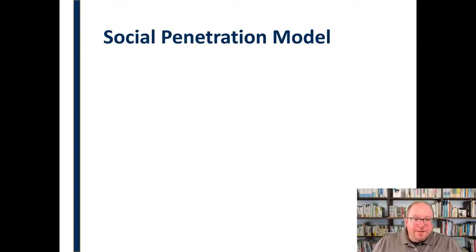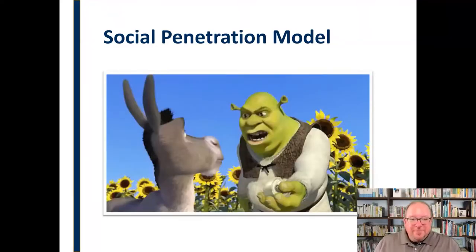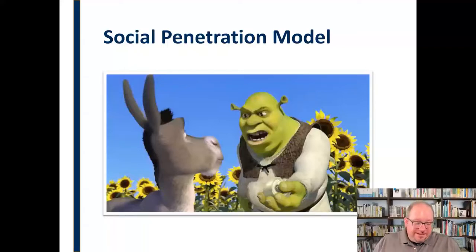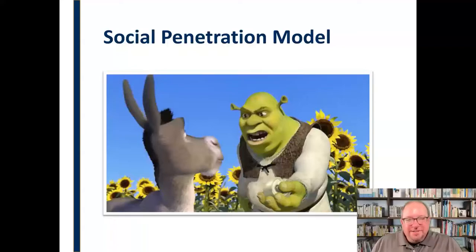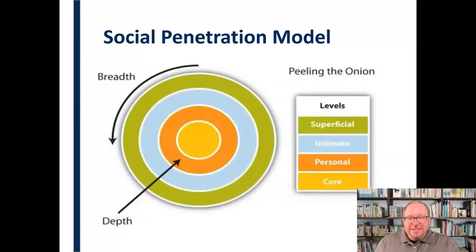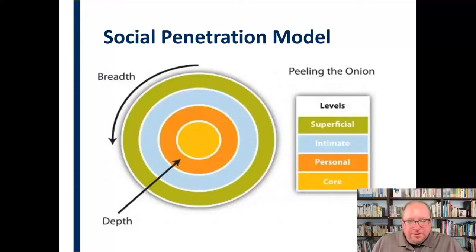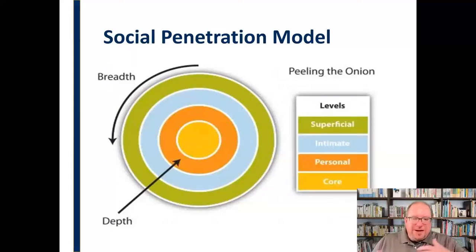Social penetration theory is sometimes called the onion theory. That actually comes up in the movie Shrek — when Shrek explains to Donkey that ogres are like onions, they have layers. What he's really explaining is the idea of the social penetration model. Essentially, it implies that people have layers, and social penetration takes place on a couple of different axes — the idea of depth and breadth involved in self-disclosure — and what we disclose happens along those two axes.